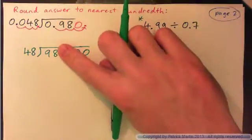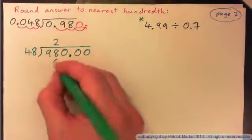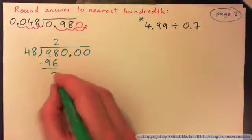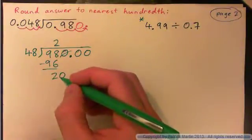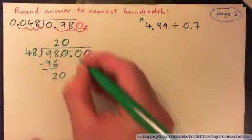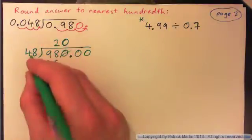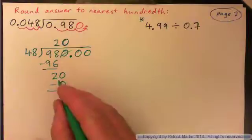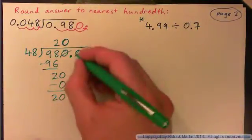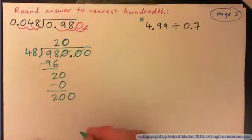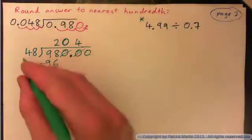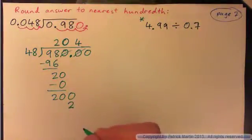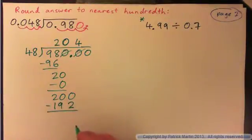48 into 98 — is that 2 times? 2 eights is 16, carry the 1, so that's 96. Bring the 0 down. 48 into 20 goes 0 times. 0 times 48 is 0. Subtract: 20 minus 0 is 20. Bring down the 0. 48 into 200 goes 4 times. 4 eights is 32, carry the 3. 4 fours is 16, plus 3 is 19. Subtract: 200 minus 192 is 8.